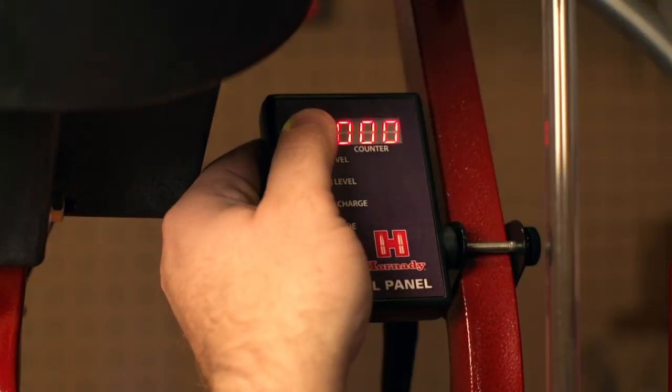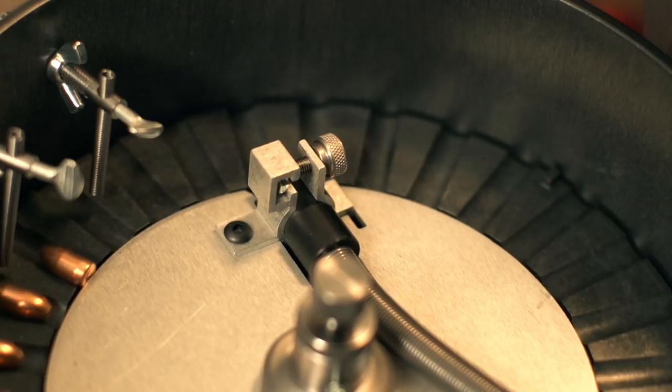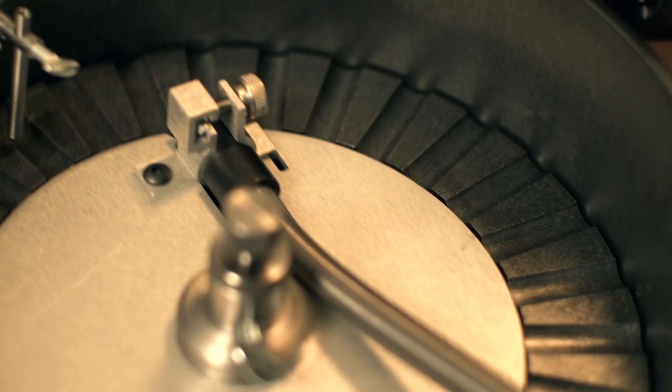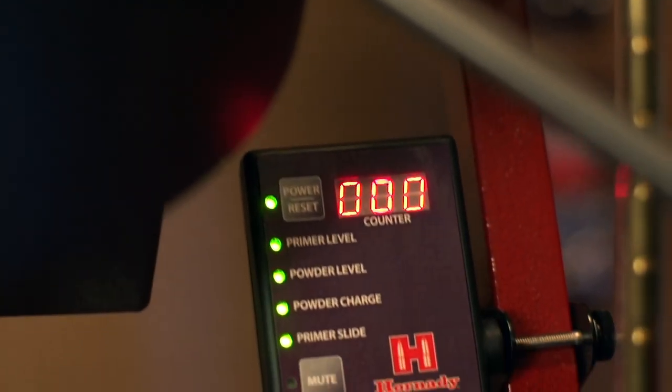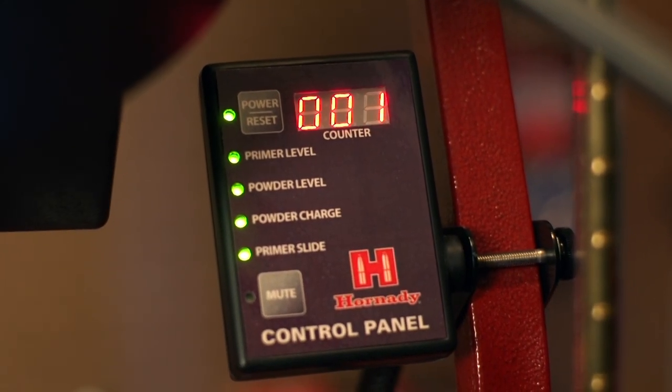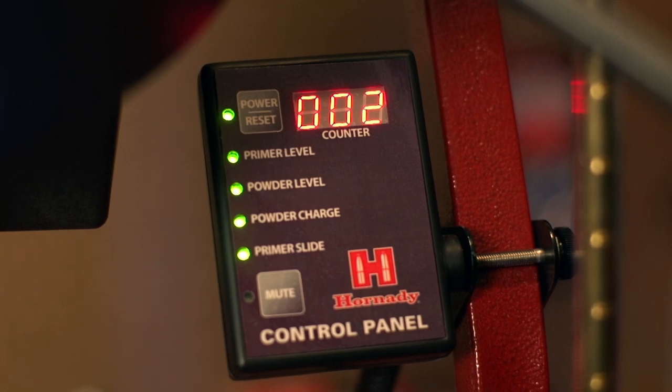The easy-to-read digital display with multiple sensors allows reloaders to set audible and visual alarms for a number of features, designed to help the hand loader keep their press running smoothly and efficiently.